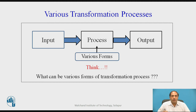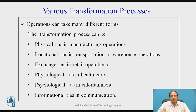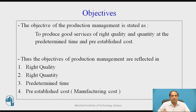Consider what the various forms of transformation processes can be. The various transformation processes can be: a physical manufacturing activity, a locational activity such as transportation from one place to another, exchange in real operations, physiological as in health care, psychological as in entertainment, and informational as in communication. There are a tremendous number of transformation processes possible which convert input into output. The various modes and methods of transformation are the details of the various operations we will study in further content.